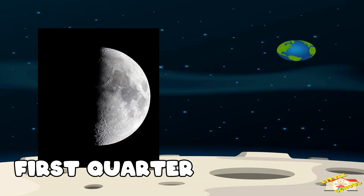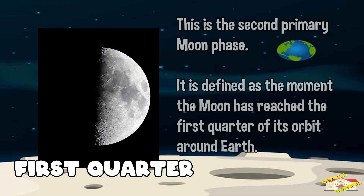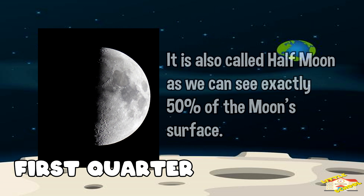The first quarter moon is the second primary moon phase and it is defined as the moment the moon has reached the first quarter of its orbit around Earth. It is also called half moon as we can see exactly 50% of the moon's surface.